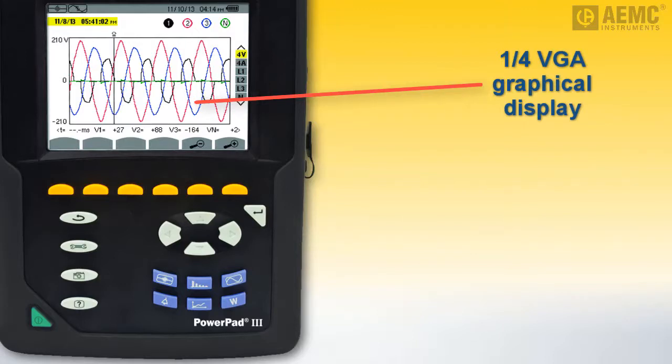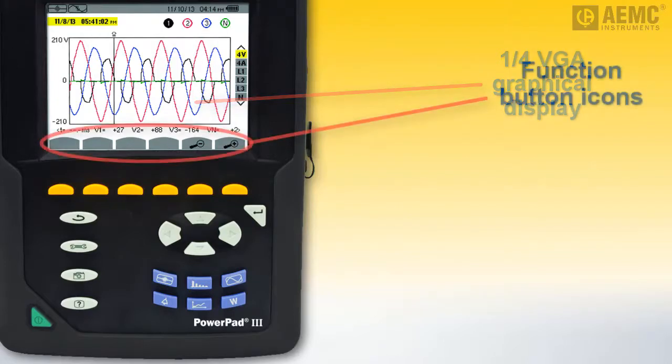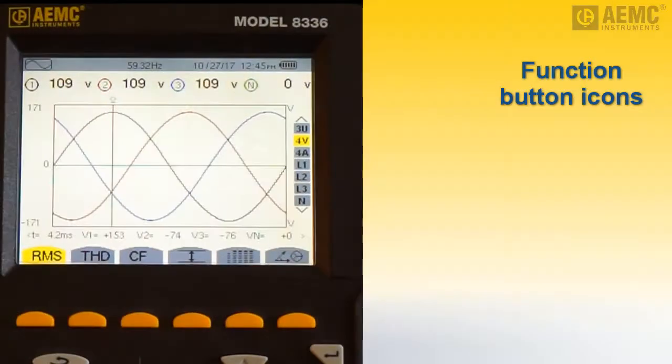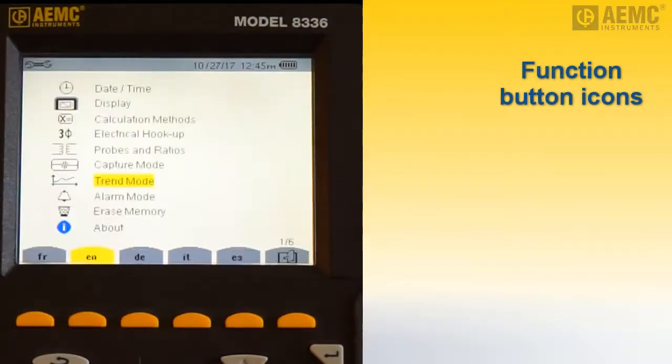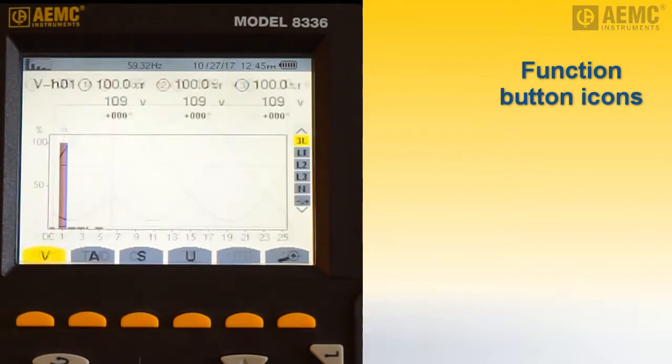At the bottom of the screen is a set of icons that correspond with the yellow function buttons immediately below them. Each icon represents the function performed by its associated button. Icons are context-sensitive. Different screens display different sets of icons. The currently selected icon appears in yellow. Unselected icons are gray.